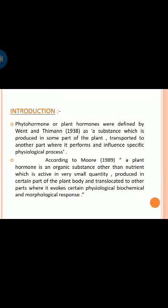Phytohormones or plant hormones were defined by Went and Thimann in 1938 as a substance which is produced in some part of the plant, transported to another part where it performs and influences specific physiological processes. According to Moore, a plant hormone is an organic substance other than a nutrient which is active in very small quantity, produced in certain parts of the plant body and translocated to other parts where it evokes certain physiological, biochemical and morphological responses.